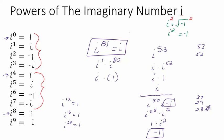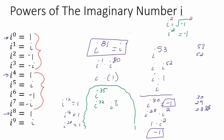Let's try one more — pause and see if you can work it out. i to the 35th power. Find a number close to 35 divisible by 4: 35 is not, 34 is not, 33 is not, but 32 is. So split it as i to the 32nd times i to the 3rd. i to the 32nd is 1, so we're left with i to the 3rd, which is negative i. You really only need to know those first four values to figure out the answer.